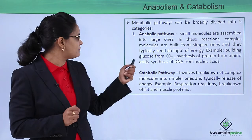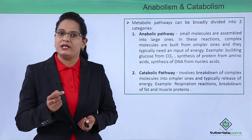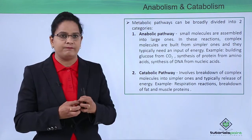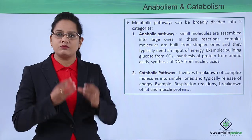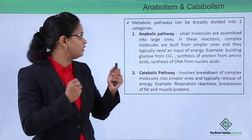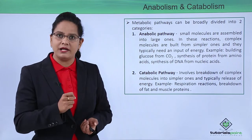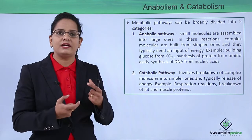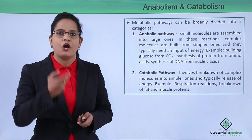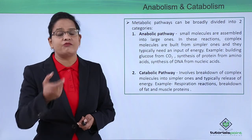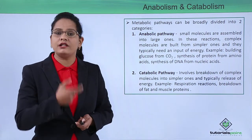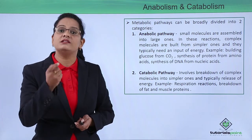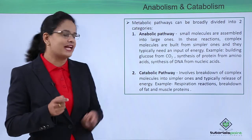Metabolism can be divided into two categories: catabolism and anabolism. Anabolic pathways involve formation — small molecules are assembled together to form a big molecule. In these reactions, complex molecules are built from simpler molecules. For example, amino acids combine to form proteins, nucleotides combine to form polynucleotides, or glucose is formed from carbon dioxide. All these are anabolic reactions, and they require an input of energy, so ATP is required.